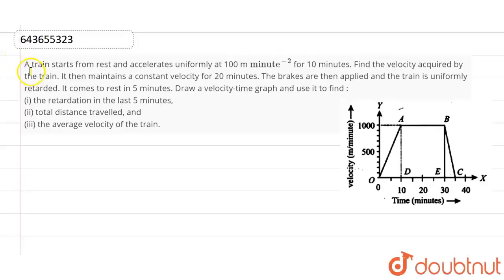The question is: a train starts from rest and accelerates uniformly at 100 m per minute squared for 10 minutes. Find the velocity acquired by the train. The train maintains a constant velocity for 20 minutes. The brakes are then applied and the train is uniformly retarded. It comes to rest in 5 minutes.